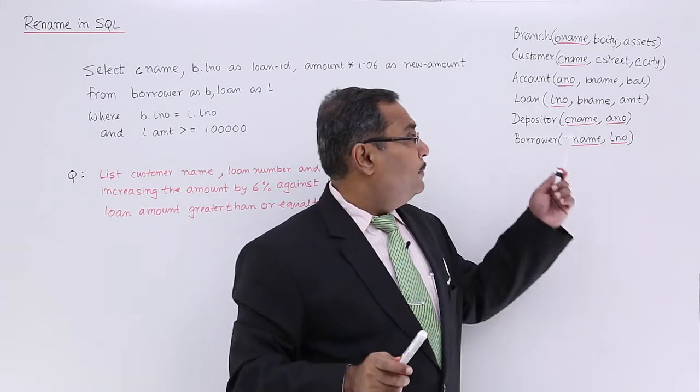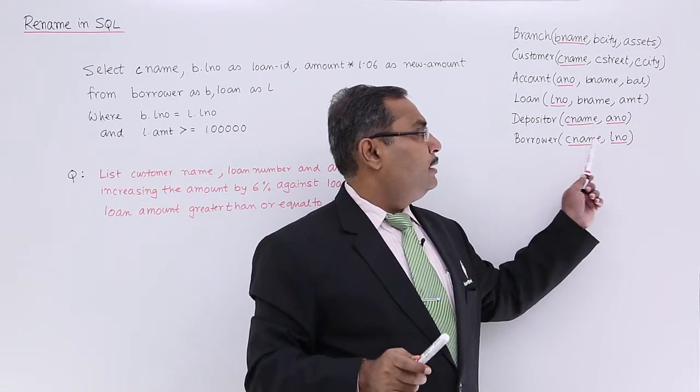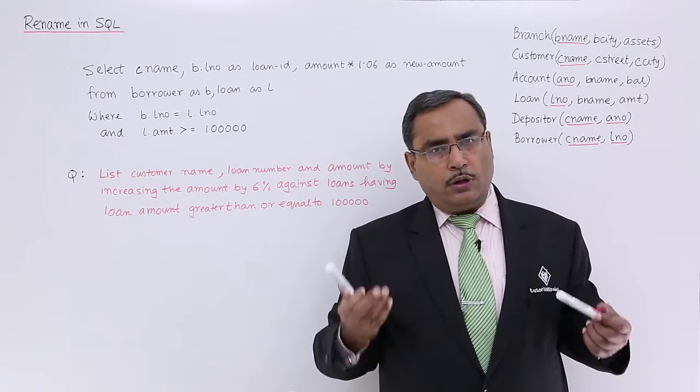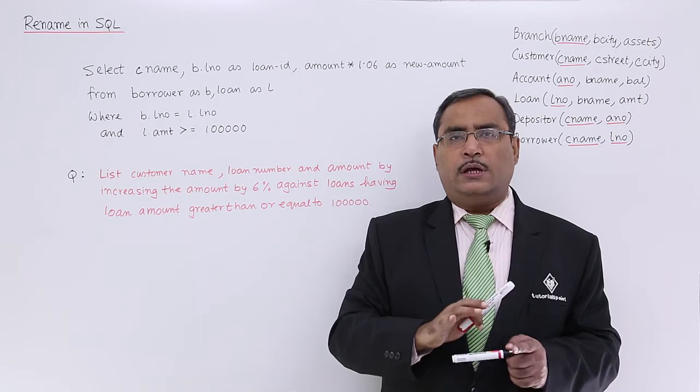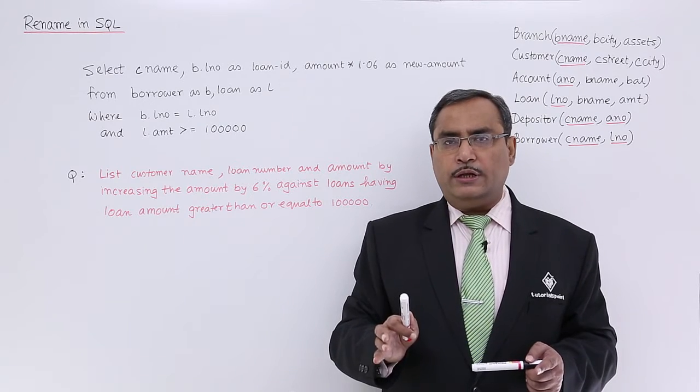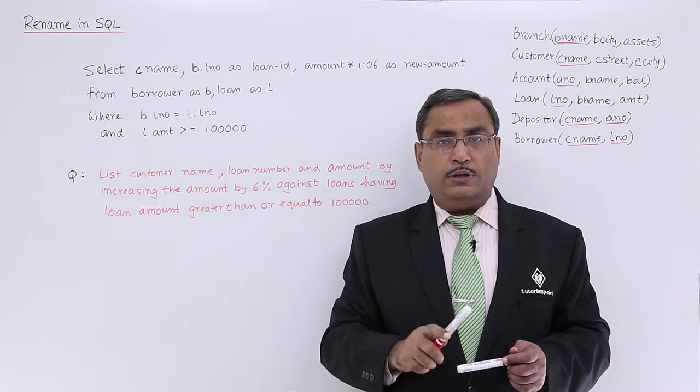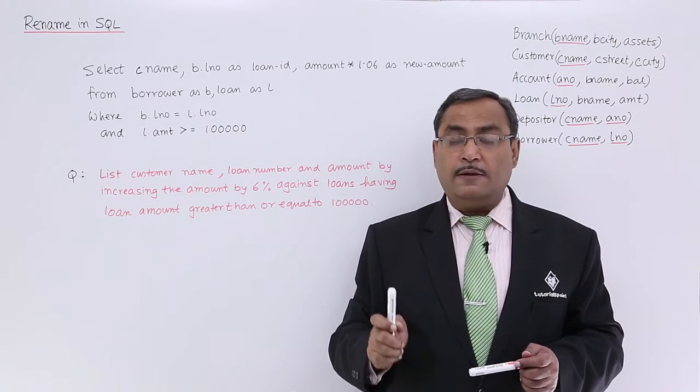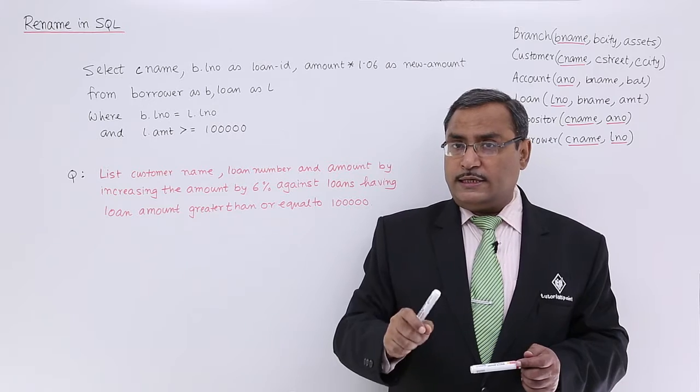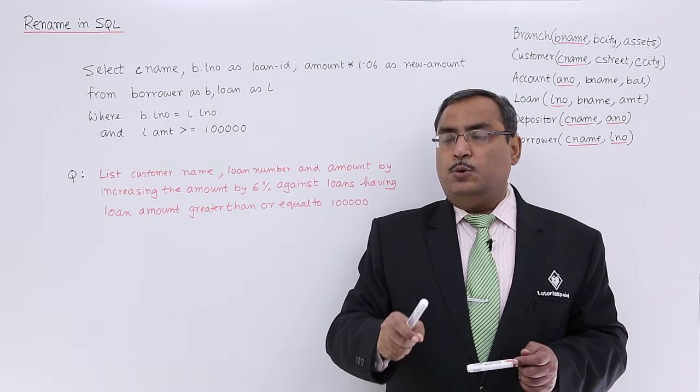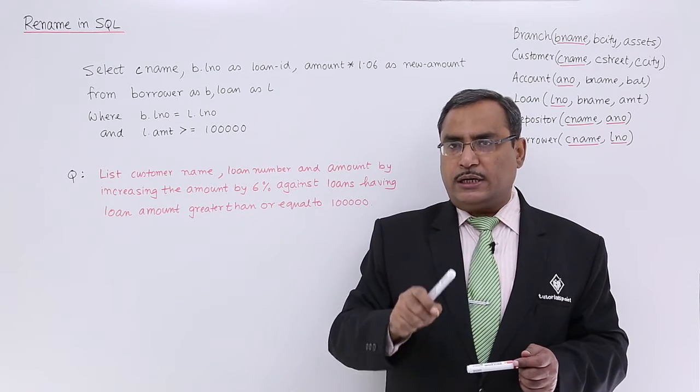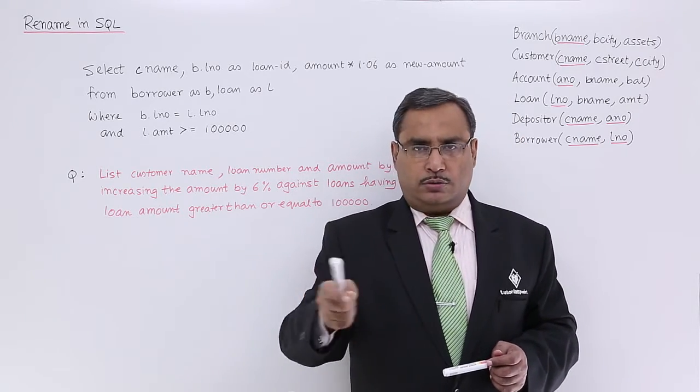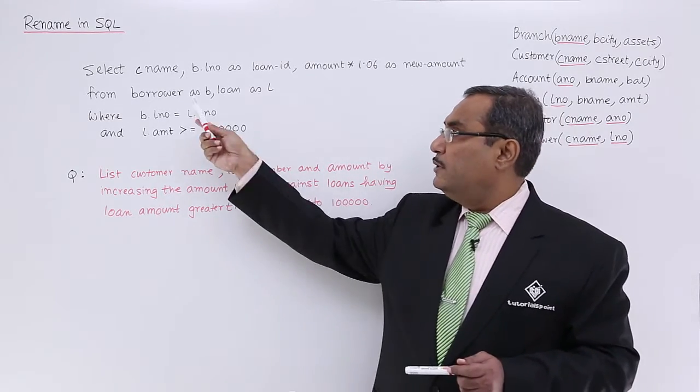Here, amount is only available in the loan relation. It is not available in the borrower. Instead of writing L dot amount, I could have also written only amount because that will not produce any ambiguity. When the same attribute names are present between the participating relations here, participating tables here, then for those cases to resolve the ambiguity, we should mention either the relation name dot or the relation renamed name dot. In this way we shall be writing the query.